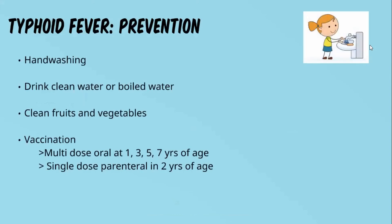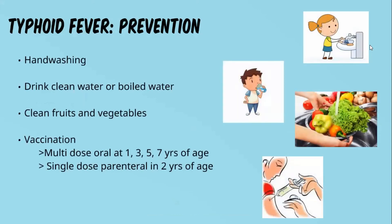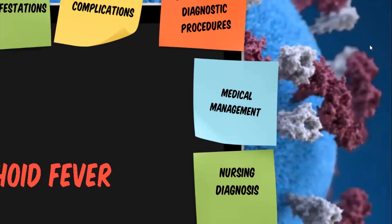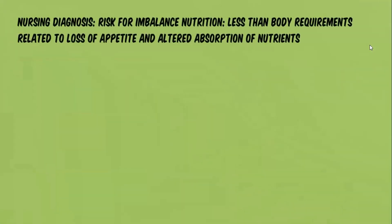Prevention of typhoid fever includes hand washing, sanitation, and hygiene — especially since it is transmitted through food and water. Drink clean, safe water, clean fruits and vegetables thoroughly, and get vaccinated, as vaccination helps prevent typhoid fever.